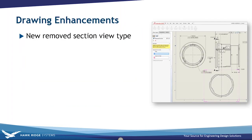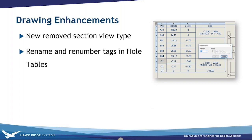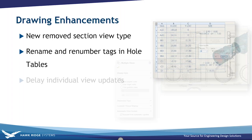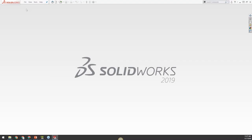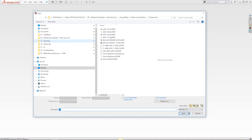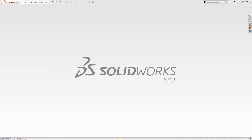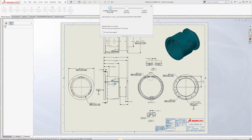Turning to drawing enhancements — there are many new features. Key ones include the new Removed Section View type for creating slice sections in a few clicks, renaming and renumbering tags in hole tables, and delaying individual view updates. There are also bonus drawing tips not specific to 2019 but generally useful. Opening a camera assembly drawing to demonstrate, the first new feature is the Removed Section View.